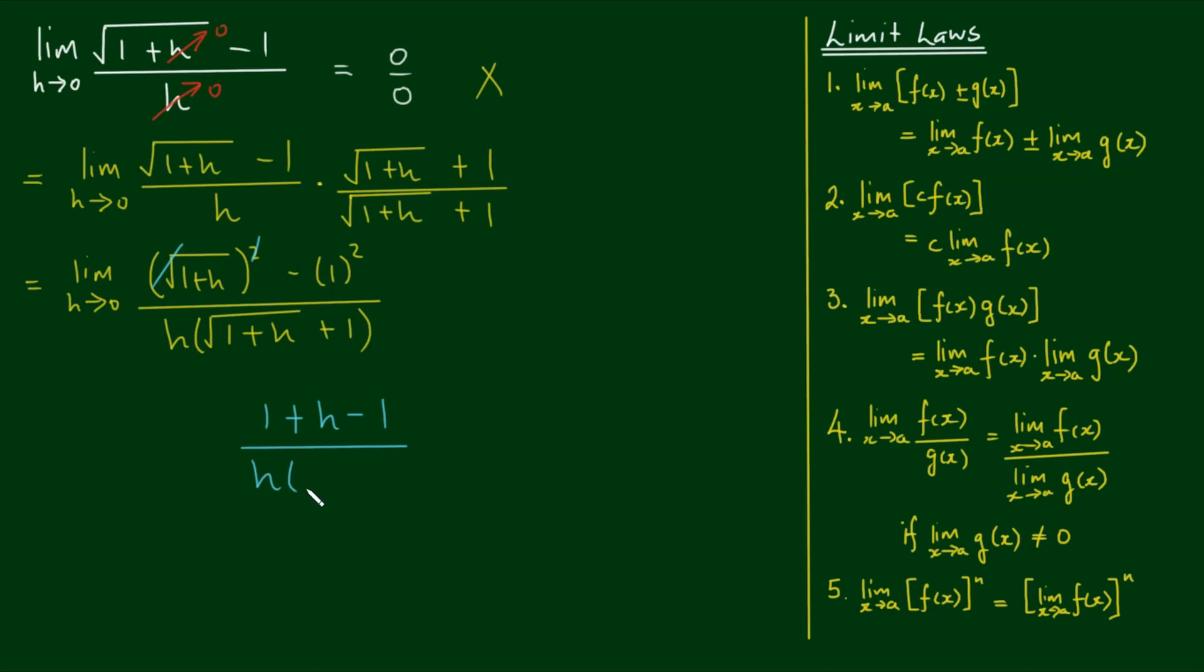So we've got h by the square root of 1 plus h plus 1. We copy down the limit. 1 and minus 1 will cancel each other. And now I've got h on the top divided by h on the bottom, and they can cancel each other. So this limit now equals the limit as h approaches 0 of 1 divided by the square root of 1 plus h plus 1.